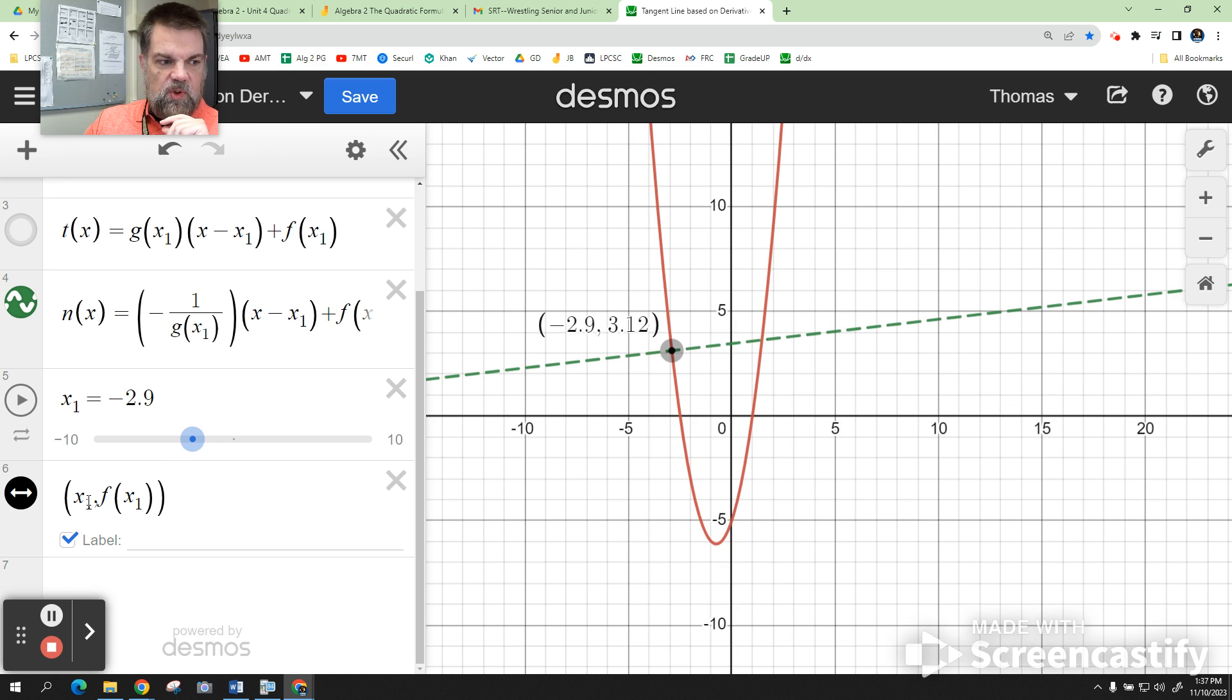I also label the point (x₁, f(x₁)), which gives me the value as I slide the slider.